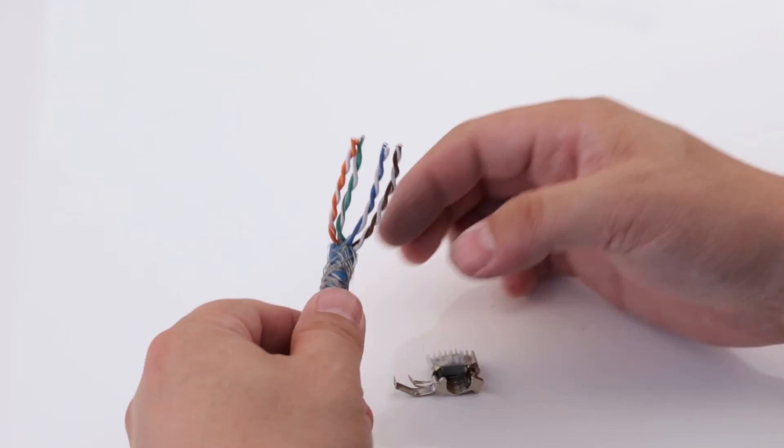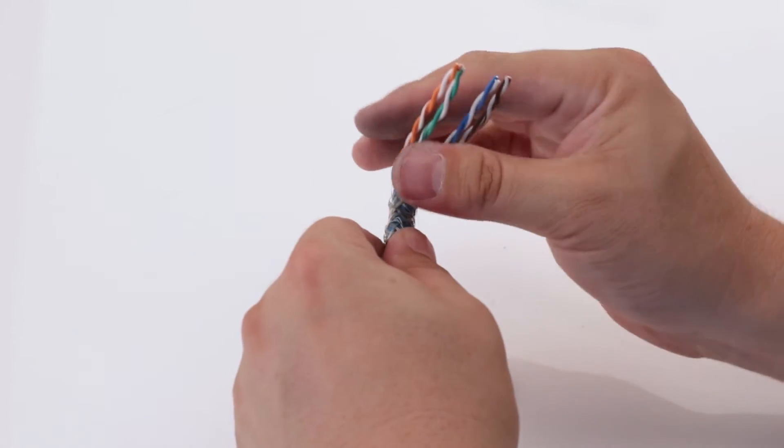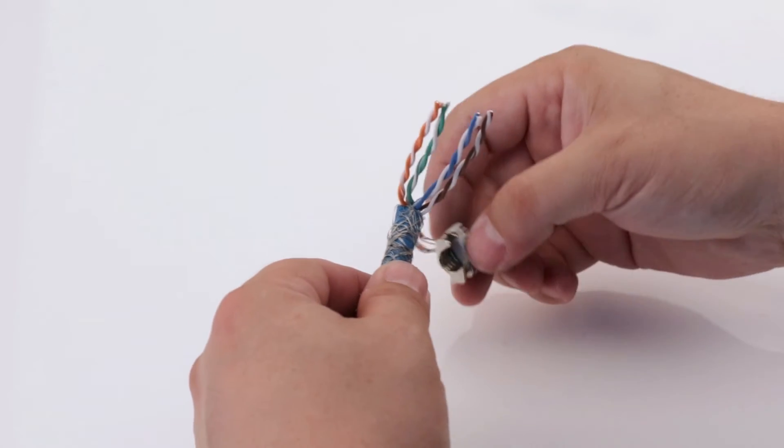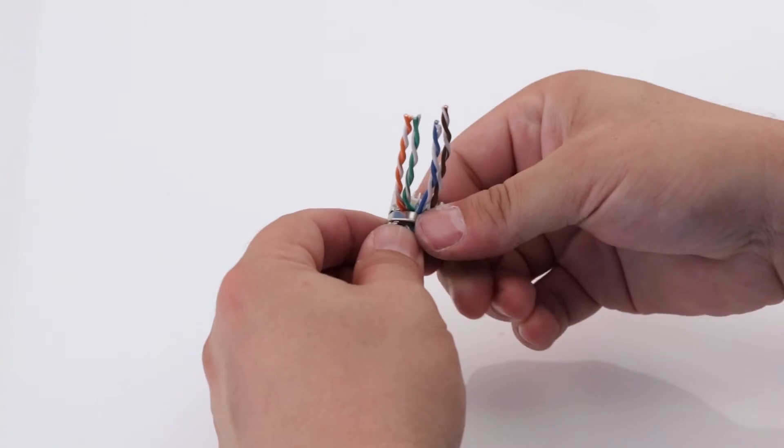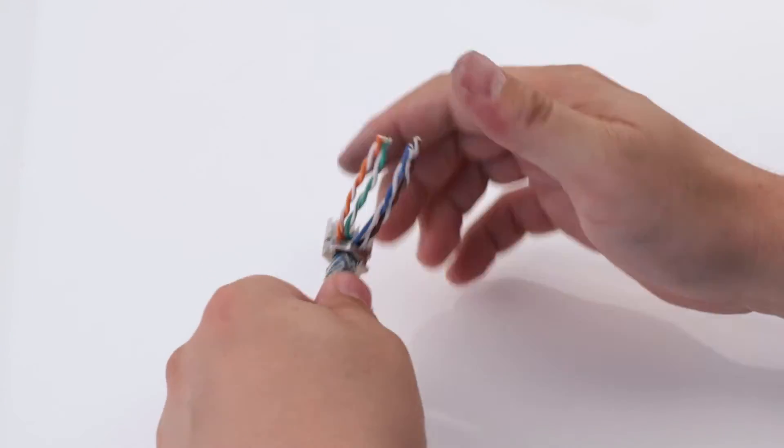Next, seat the cable jacket and outer braided shield into the metal clip of the termination module. Using your fingers or the included termination tool, close the clip by pressing down on the outer edge until you hear a click.